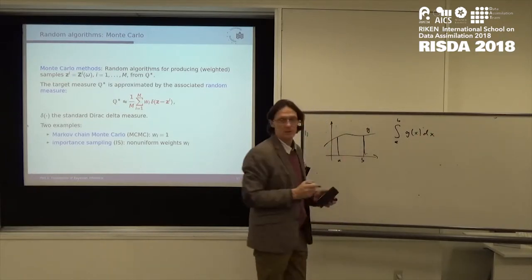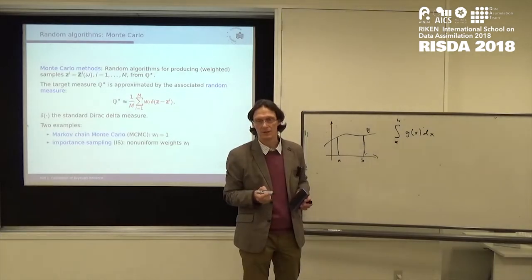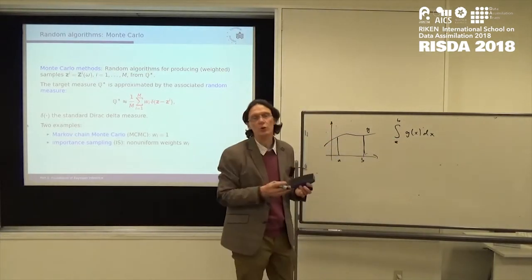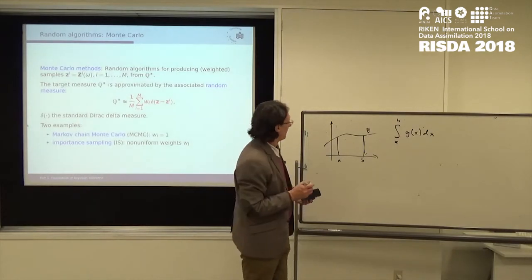If the length of this interval is one, then that's itself is a density. Otherwise, you have to normalize. So this is, in a way, it's an expectation value with respect to a uniform measure on that interval.